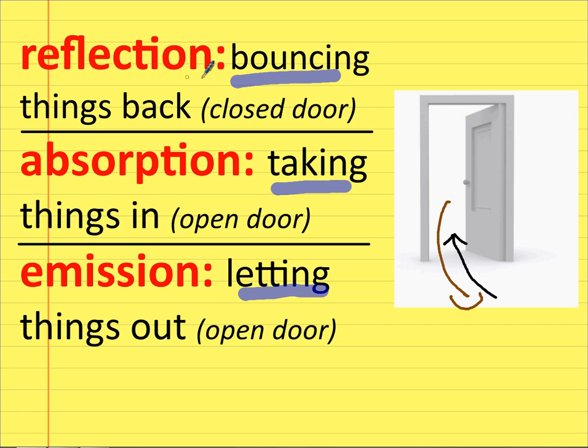I also like to think of a sponge. A hard dry sponge, if you put water on it, it's going to bounce the water off. Where if you have a sponge that's ready, it will take water in and then you can squeeze it and push the water out. That's emission.